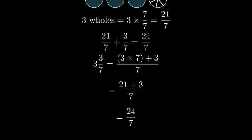Then add the numerator. 21 plus 3 equals 24. Keep the same denominator, 7.